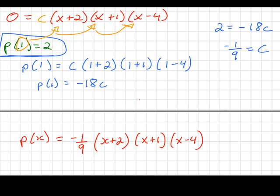Substituting the value of c back in, I get a final answer of P(x) = -1/9 times the quantity (x+2)(x+1)(x-4).